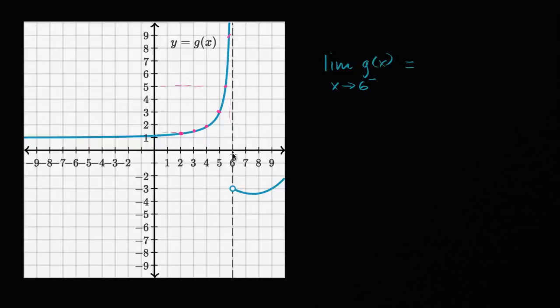And so as x gets closer and closer to six from the left, it looks like the value of our function just becomes unbounded. It's just getting infinitely large.